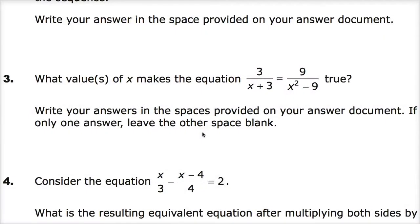The question says what value or values of x makes the equation 3 over the quantity x plus 3 equals 9 over the quantity x squared minus 9 true. Write your answers in the spaces provided on your answer document. If there is only one answer leave the other space blank. The question itself just wants to know what the values of x are that make this true. Of course the idea that there might be more than one answer is validated by the fact there's an x squared here.